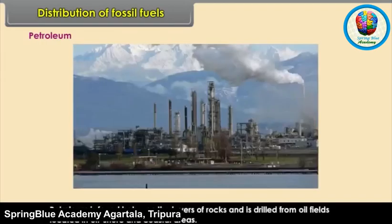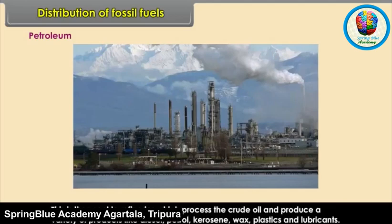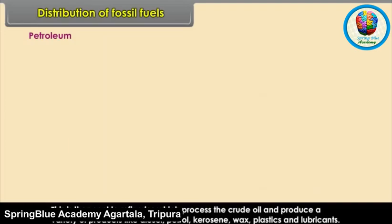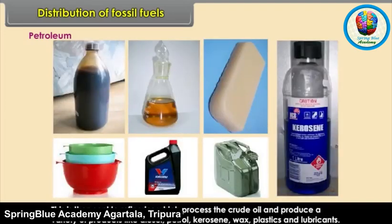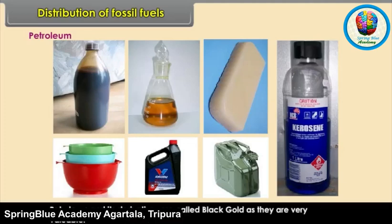Petroleum: Petroleum is found between the layers of rocks and is drilled from oil fields located in offshore and coastal areas. It is then sent to refineries which process the crude oil and produce a variety of products like diesel, petrol, kerosene, wax, plastics and lubricants. Petroleum and its derivatives are called 'black gold' as they are very valuable.